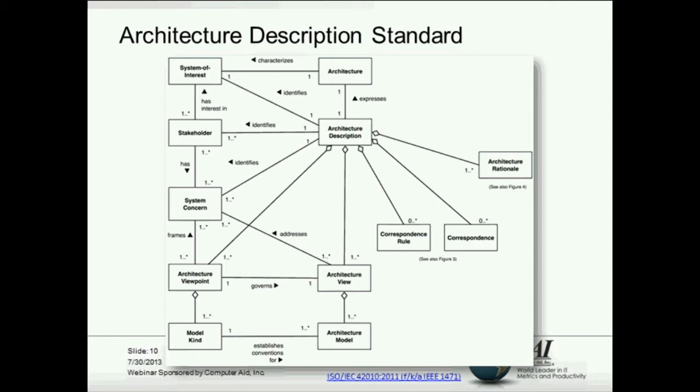So, the first thing that this diagram tries to represent is that there is a difference between the architecture of a system, which is called a system of interest. And the system of interest might be an IT system, a particular application or family of applications, or it could be a system that's completely based on the business's organization process of people or a combination of both.